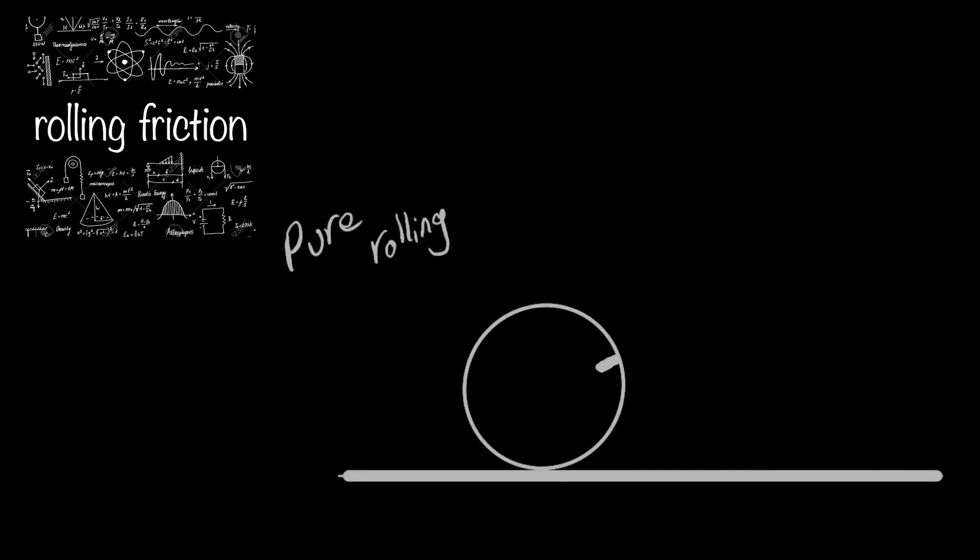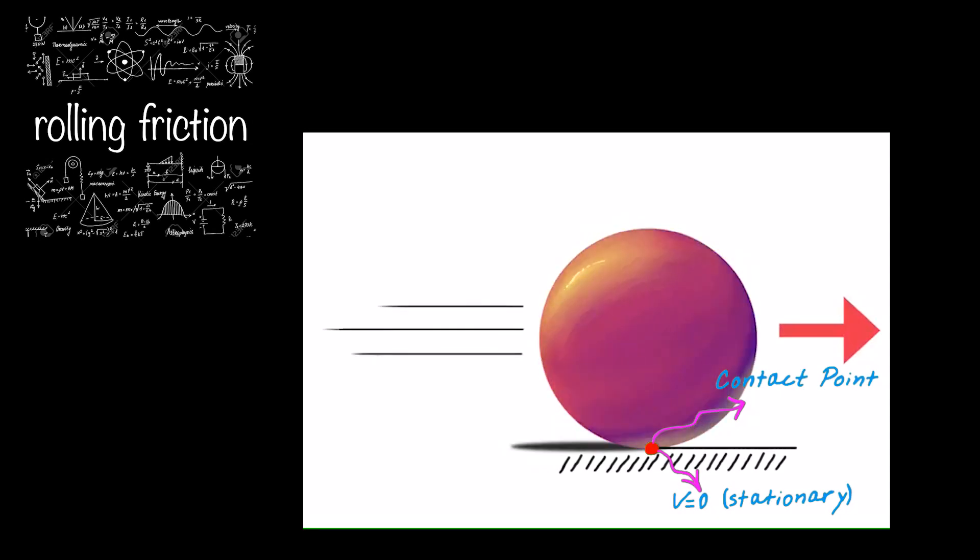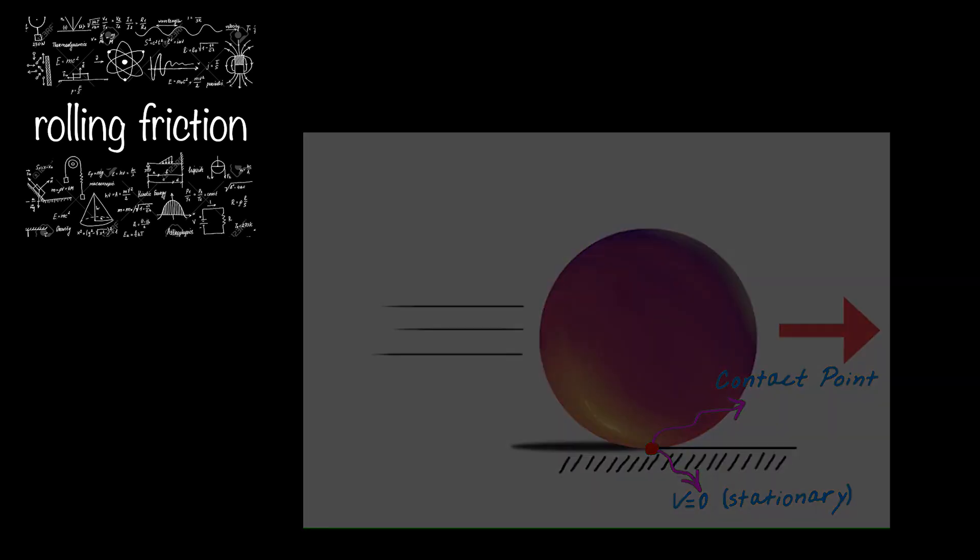You might wonder why. Before answering this question, we need to note the exact definition of pure rolling. When an object, such as a disc, rolls on a surface, it is rotating without sliding. It means that the contact point between the disc and the surface is stationary and no relative motion occurs at this point.